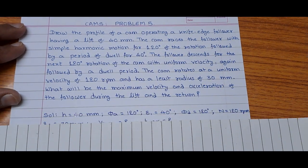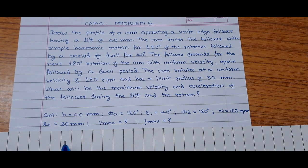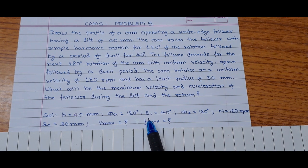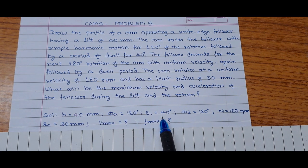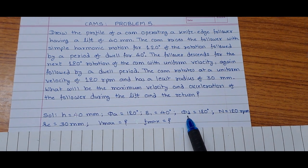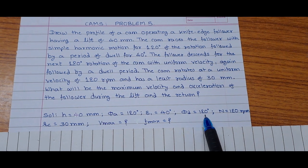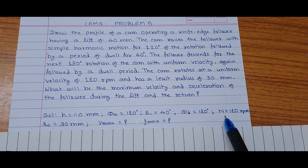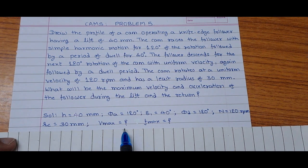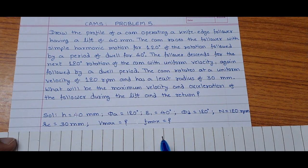Let us note down the given data. The lift of the follower is 40 millimeters. The angle of ascent, phi_a, is 120 degrees. The angle of dwell, delta_1, is 40 degrees. The angle of descent, phi_d, is 120 degrees. The cam rotates at 120 RPM. The minimum radius of the cam profile is 30 millimeters. We need to find the maximum velocity and maximum acceleration during ascent and descent.